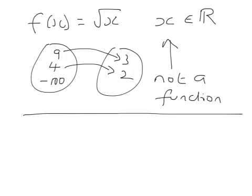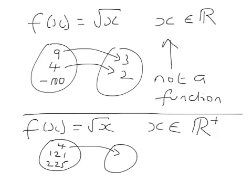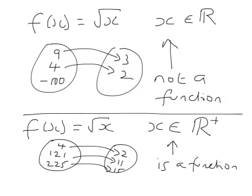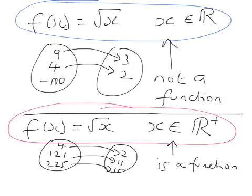However, we can make that into a function by saying f(x) is root x, and if you change the domain to say that x belongs to the set of all positive real numbers, then every element here, 4, 121, 225, maps onto exactly one element in the range. So this is a function. So by changing the domain, we've changed this, which wasn't a function, into a function here.